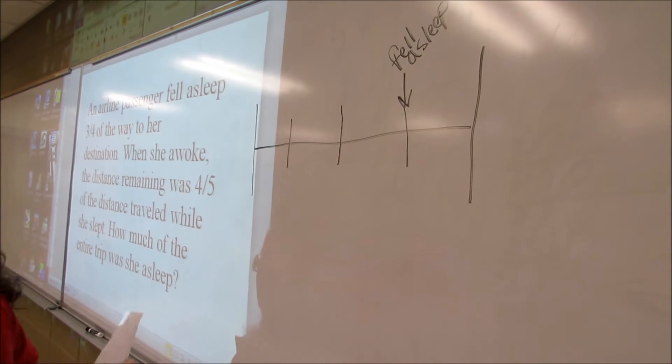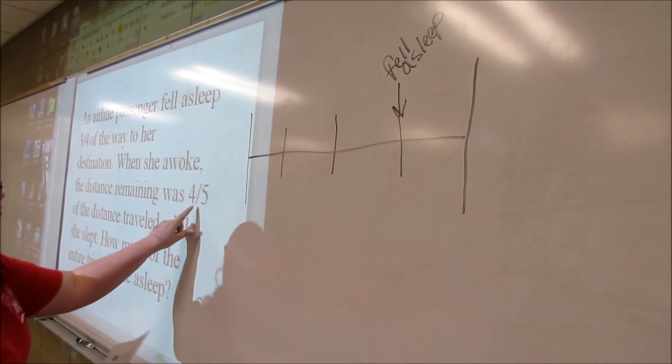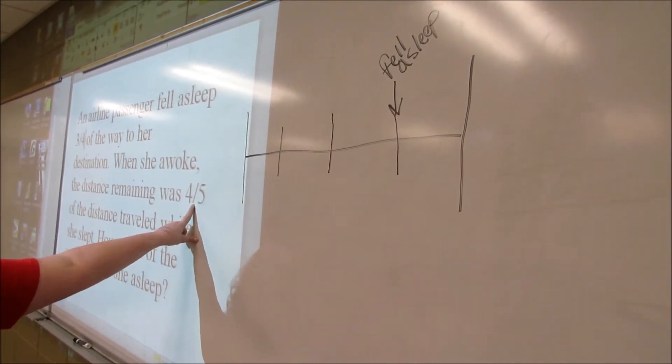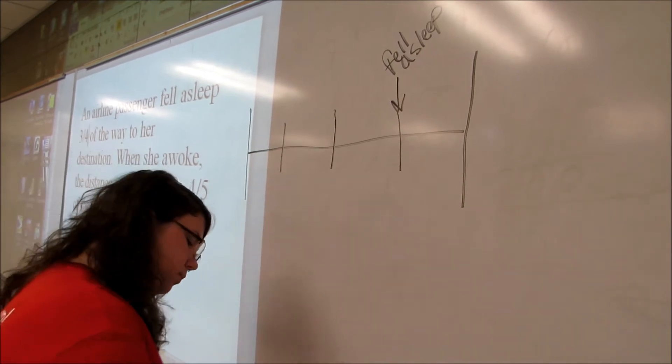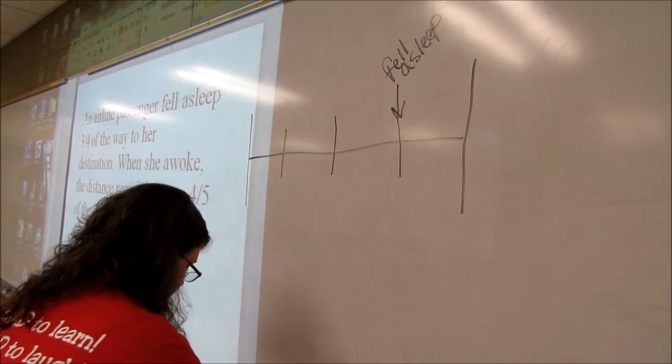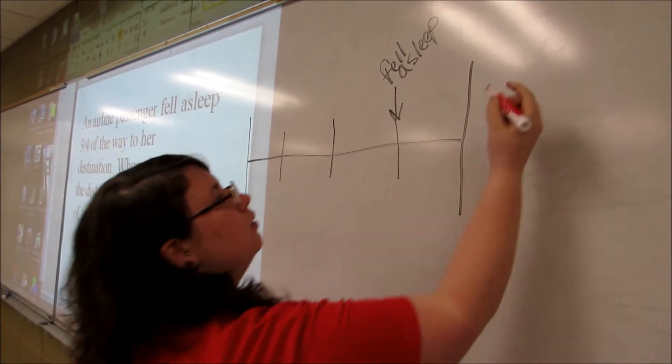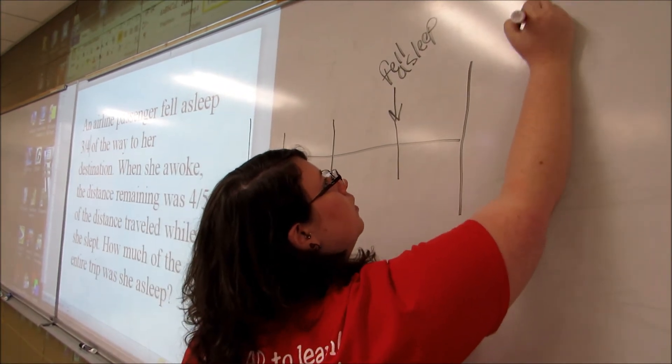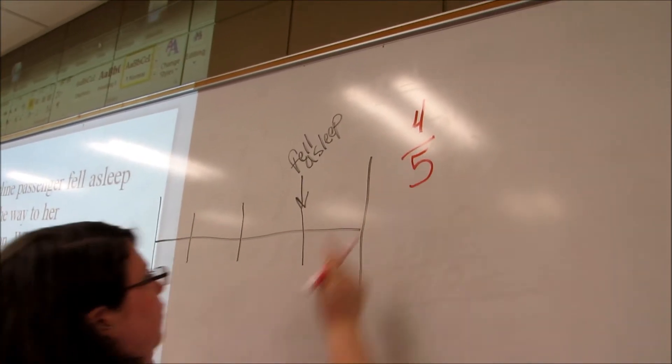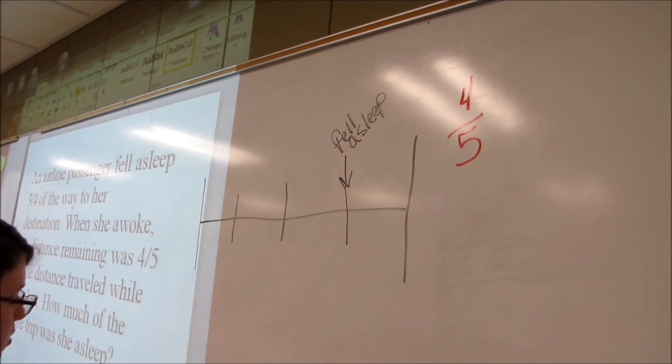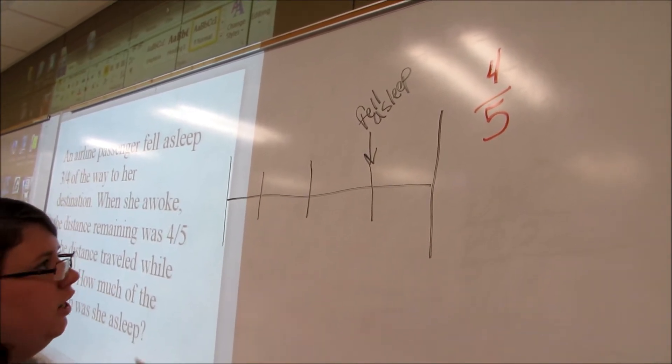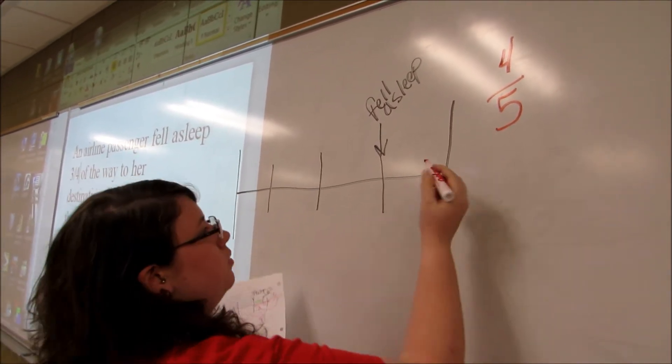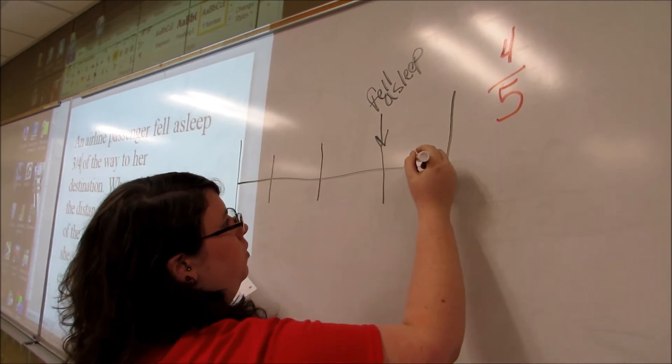Okay, the rest of the problem says when she awoke she was four-fifths of the distance traveled. What I did was I took that four-fifths, and somewhere she had to wake up, right? So we're going to say maybe she woke up around here.